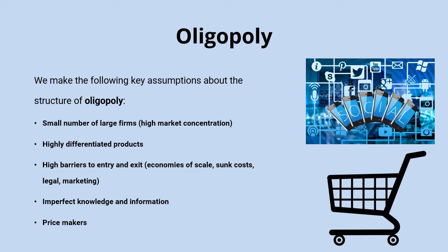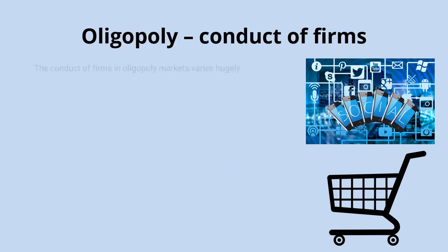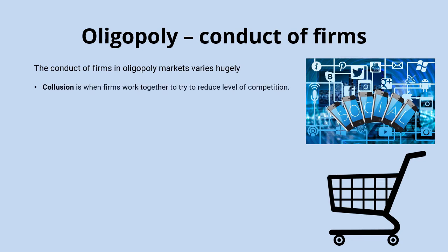There are important technical terms describing the conduct of firms in oligopoly. The most significant is collusion — when firms work together to reduce competition, because intense competition is likely to reduce profits for all of them. However, oligopolies can also be non-collusive, partly because regulation controls collusion and could lead to a hefty fine from the Competition and Markets Authority if proved.